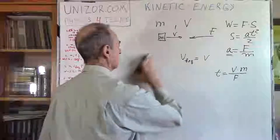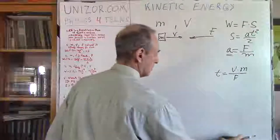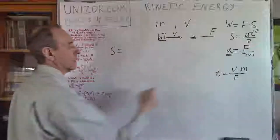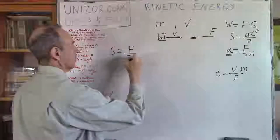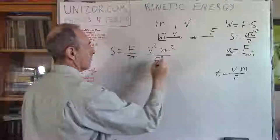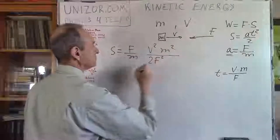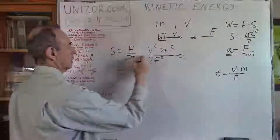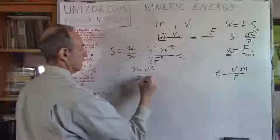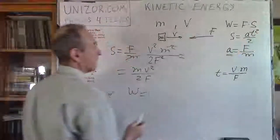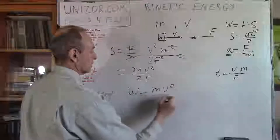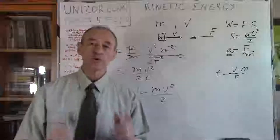Now I know acceleration A = F/M and time T = MV/F, so I can find the distance. S = A × T²/2 = (F/M) × (MV/F)²/2 = MV²/(2F). The work is W = F × S = F × MV²/(2F) = MV²/2. That's a remarkable result.